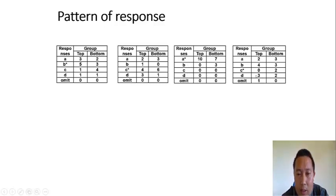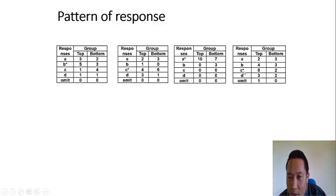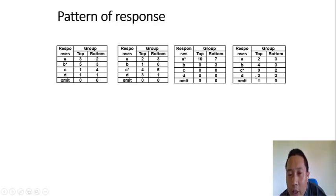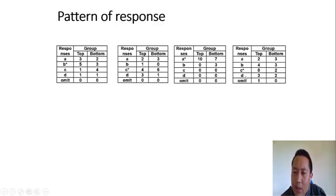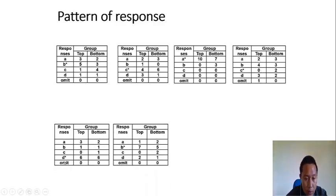In another interesting case, even though the correct answer key is C, many students from the top group chose B — they thought the correct answer was B. This case is known as a 'miss key' (M-I-S-S K-E-Y). This indicates something is wrong with the question — either the question is wrong or some distractors are very effective. You should be careful with that.